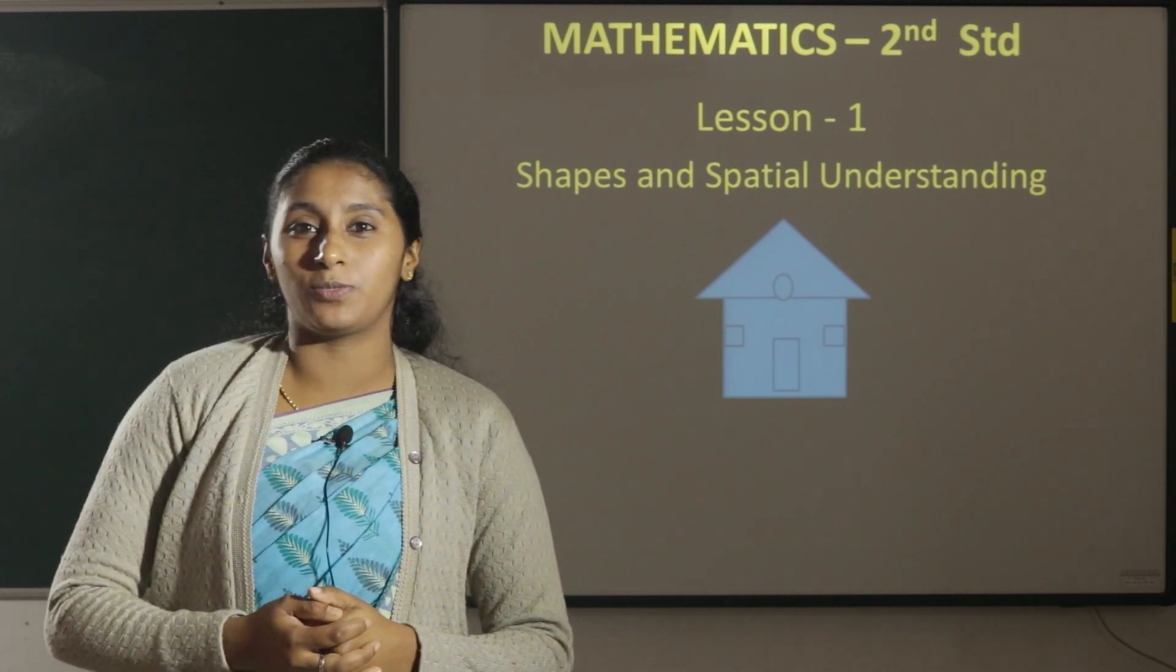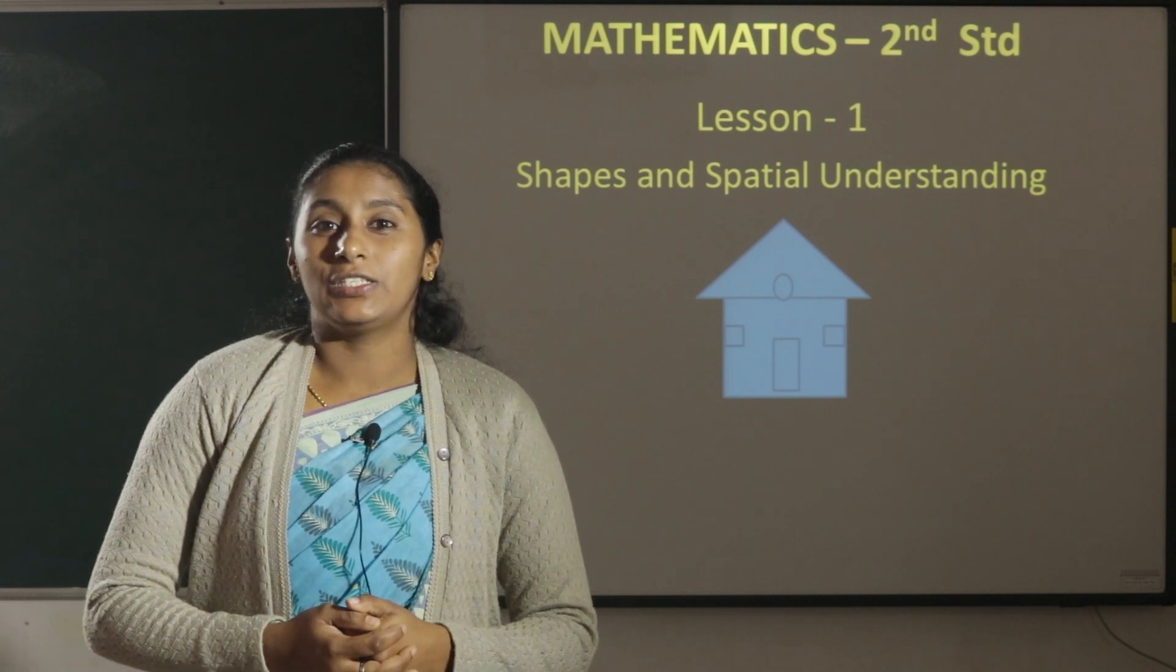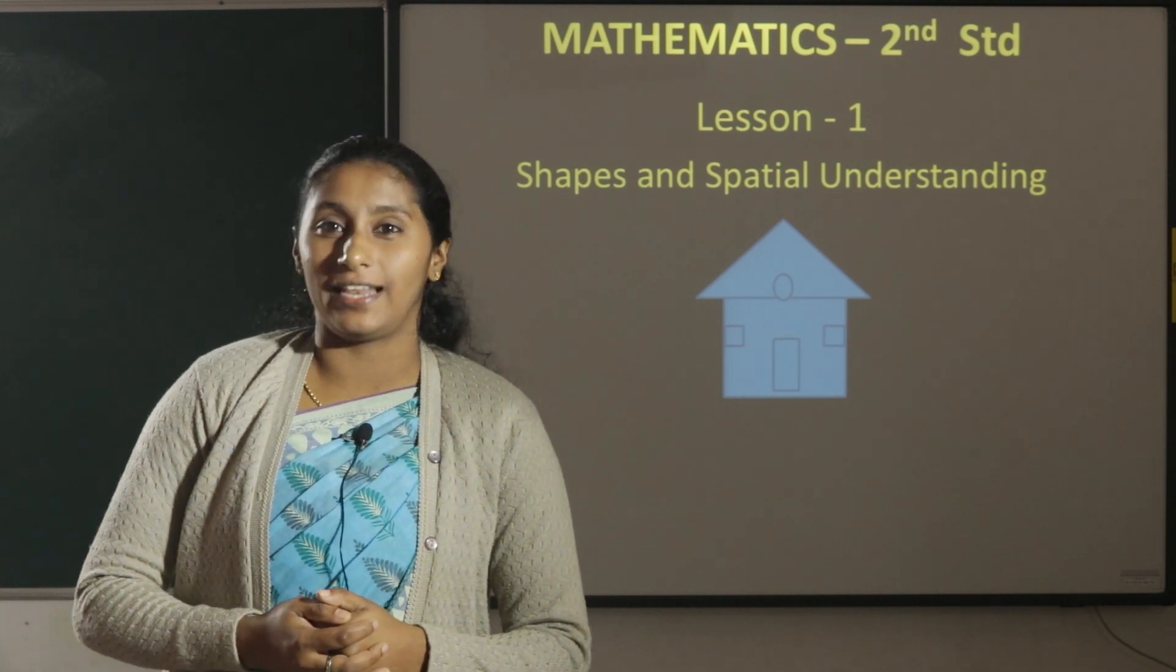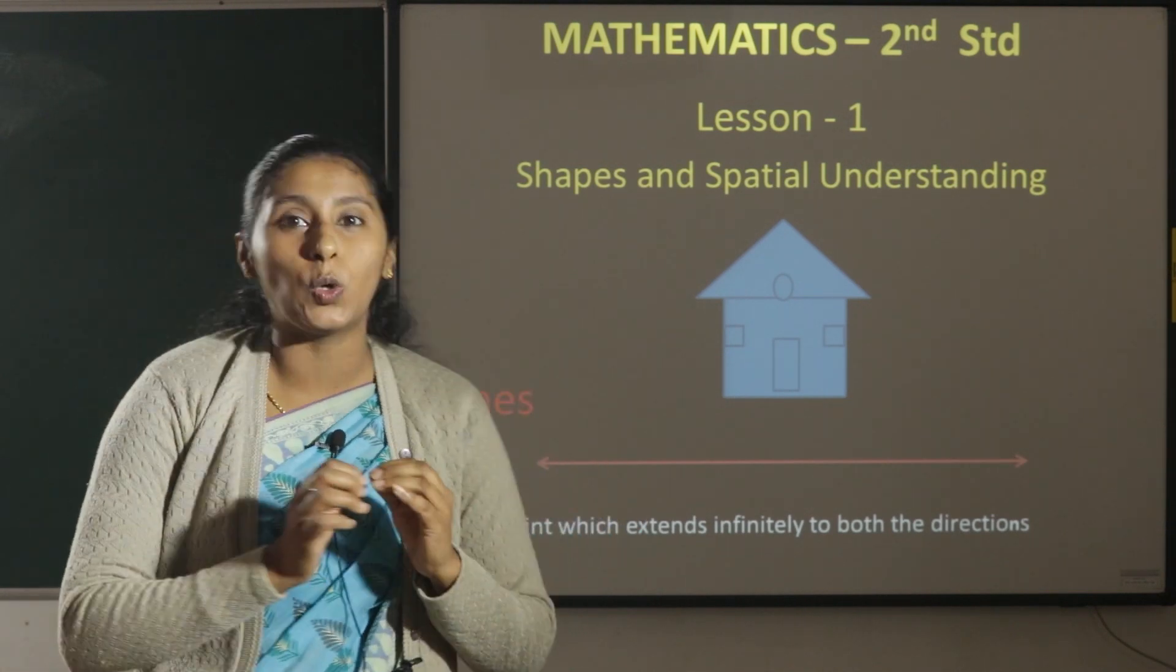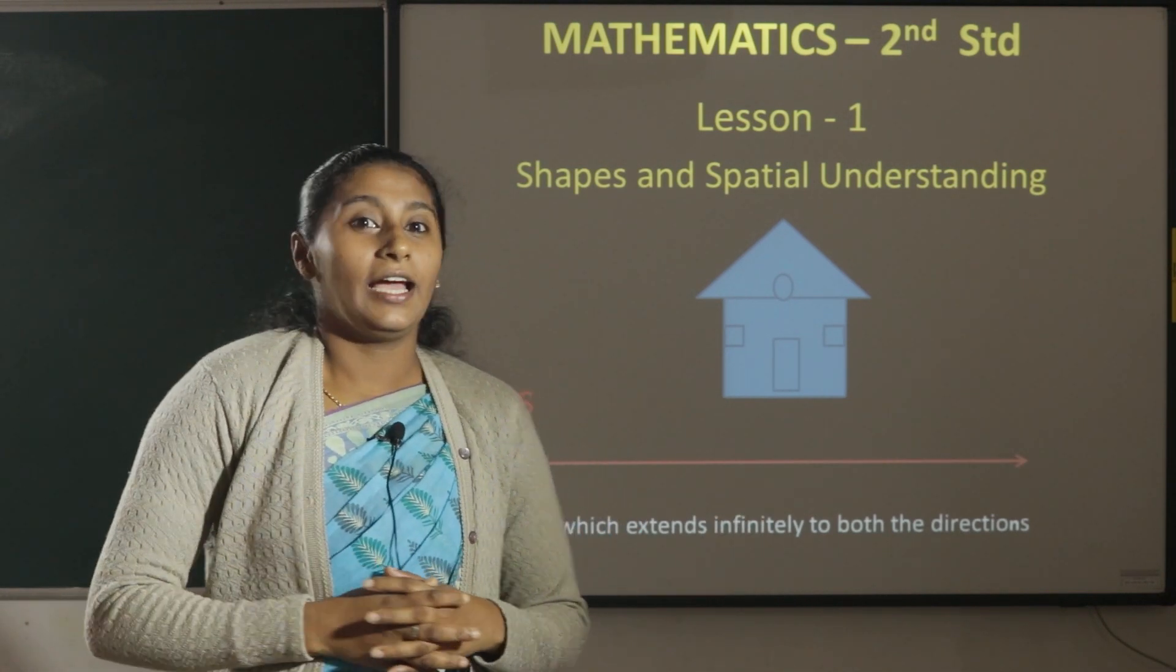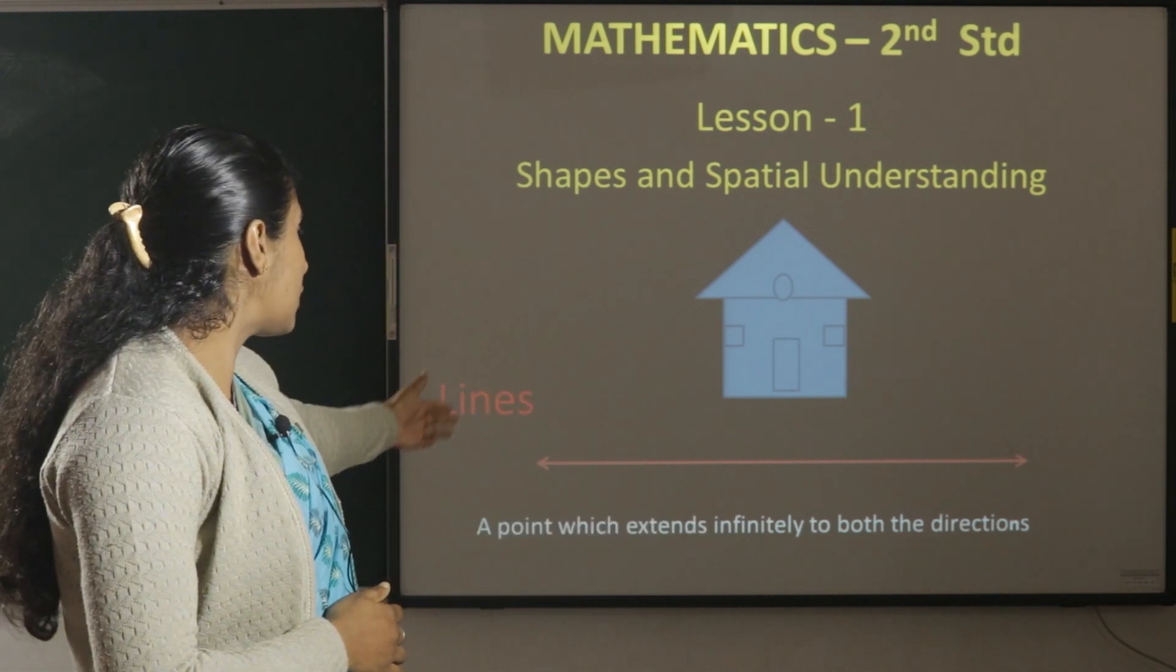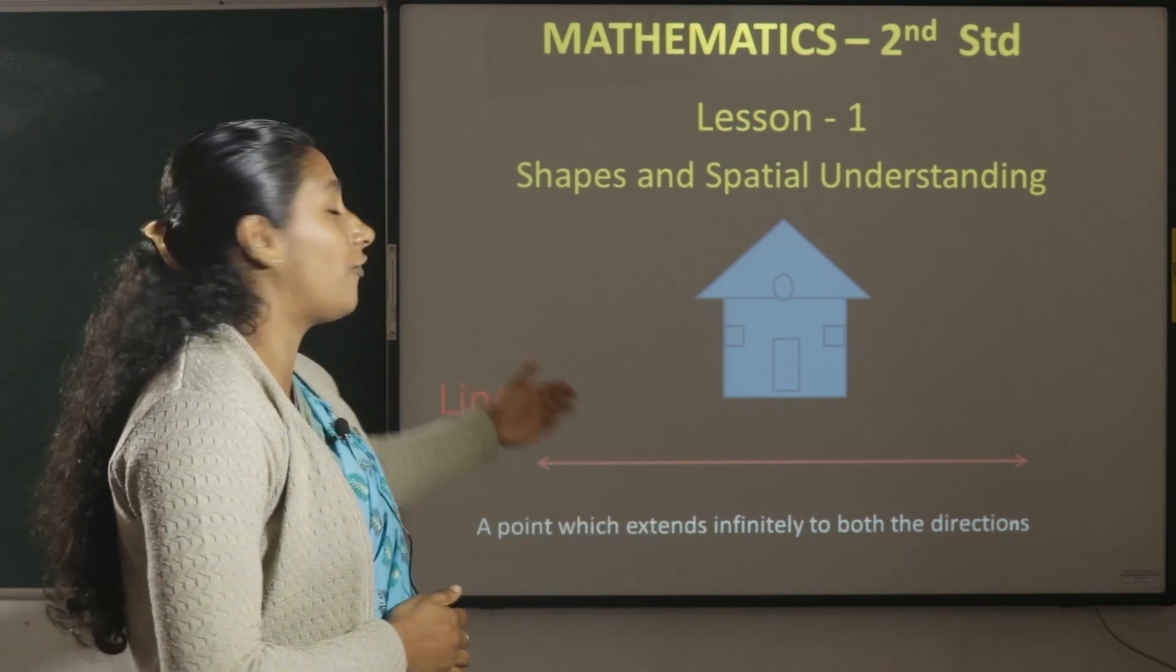We draw all the shapes by using line. So, we will see what is a line. A point which extends infinitely to both the directions. Here, the arrow marks shows the directions of a line.